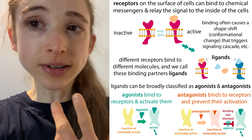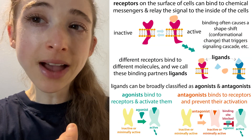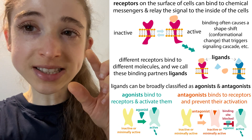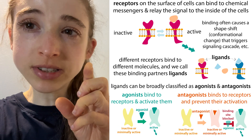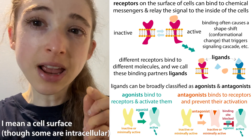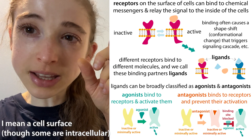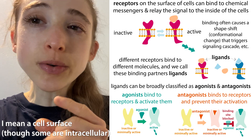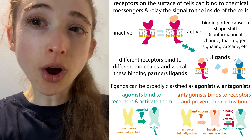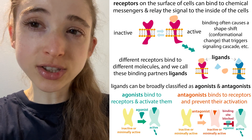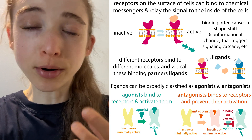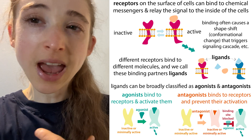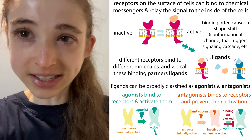For example, if you have a receptor — a molecule that sticks out of a protein surface and can keep track of what's going on outside — it's going to have a cognate ligand: a binding partner that normally binds to it and then causes things to happen.